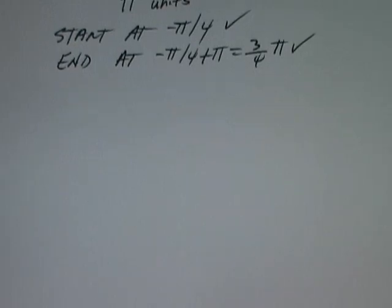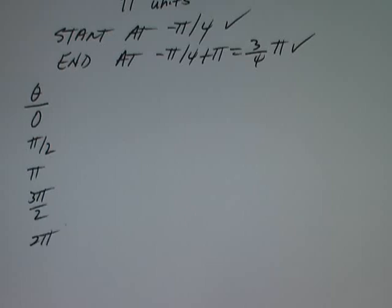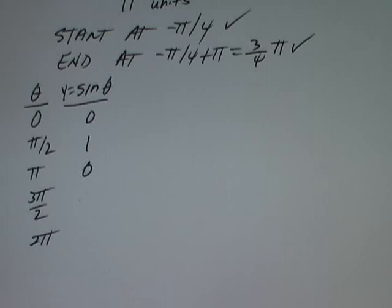I'll start with the parent function sine theta and list my theta values. We always start with θ = 0, then π/2, π, 3π/2, and 2π. For y = sin(θ): sin(0) = 0, sin(π/2) = 1, sin(π) = 0, sin(3π/2) = -1, and sin(2π) = 0.